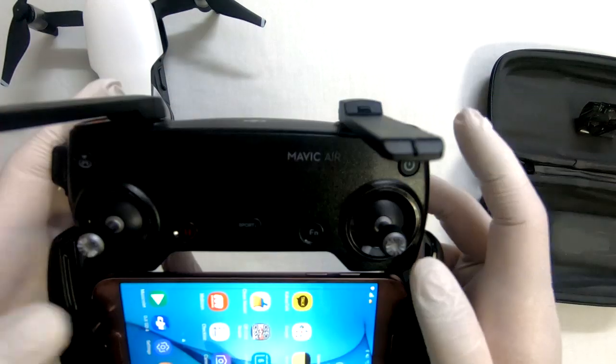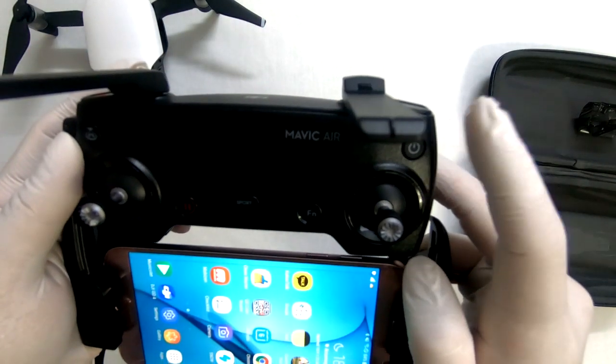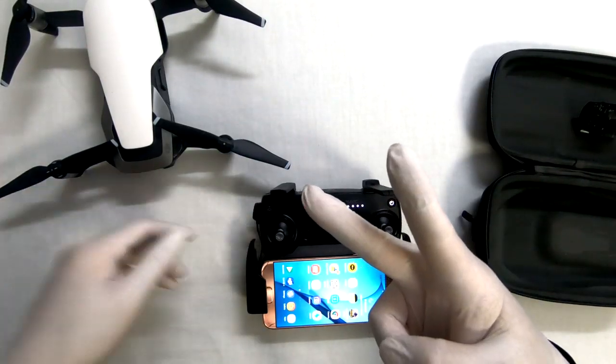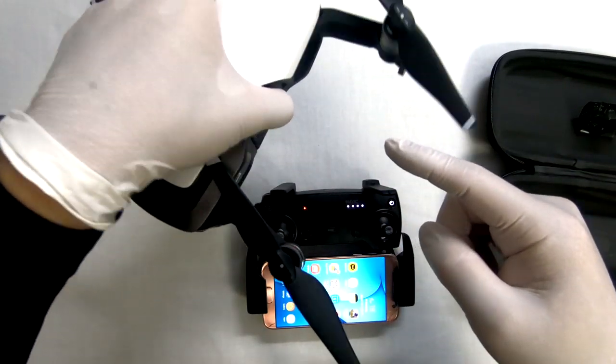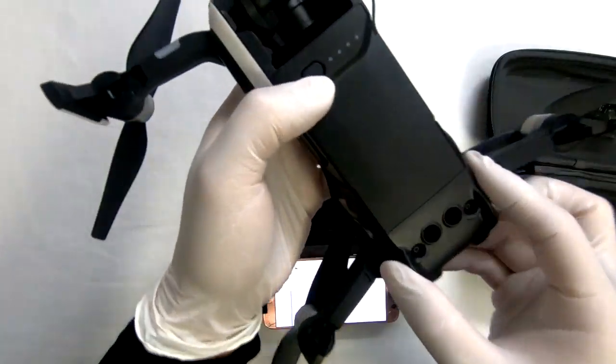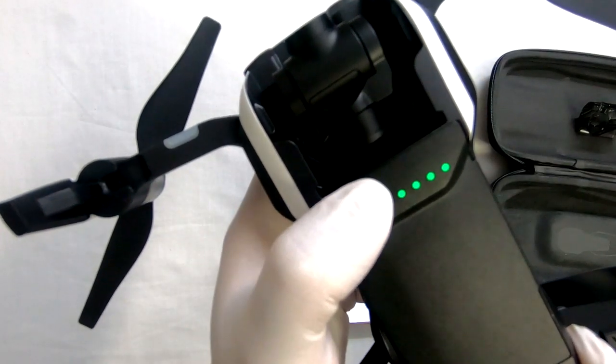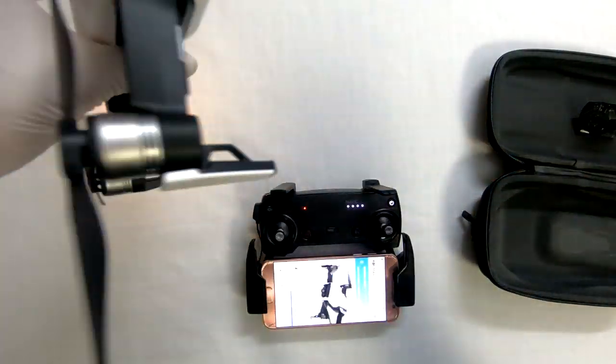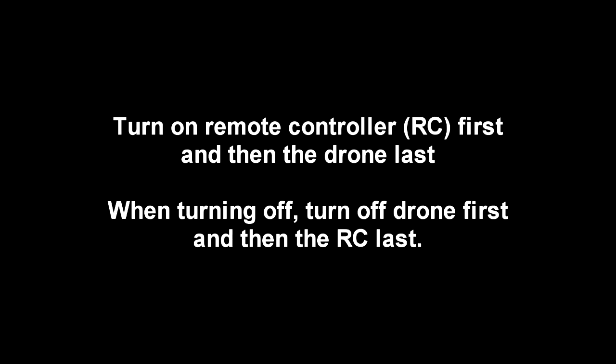The next tip is important to note. When you are turning on your devices, be sure to turn on the remote control first and then the drone second. And when shutting down, make sure you turn off the drone first and then the controller last. You never want to have the drone on while the remote control has been turned off and loses its signal.